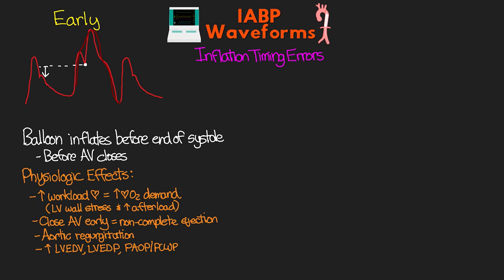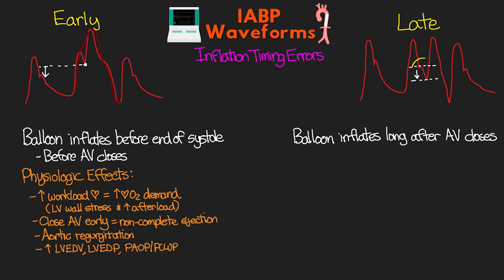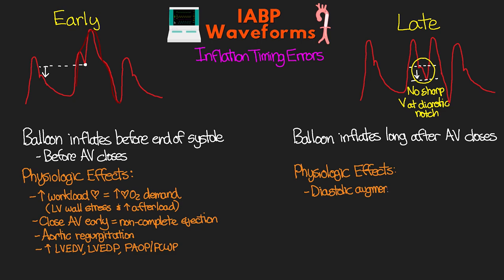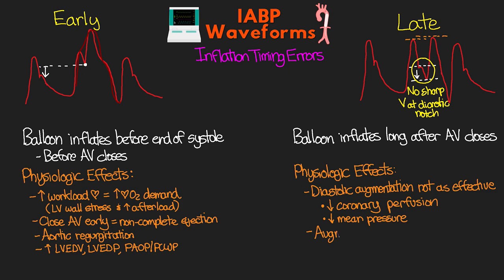The next timing error is late inflation. Here the balloon is inflating after the aortic valve has closed, leading to suboptimal diastolic augmentation. You won't see a sharp V at the dicrotic notch. The big physiologic effect is that diastolic augmentation is not as effective, meaning less coronary artery perfusion and a decreased mean pressure. You may also see the augmentation pressure equal to or even less than the systolic peak pressure, whereas normally we'd expect the augmented pressure to be much higher.